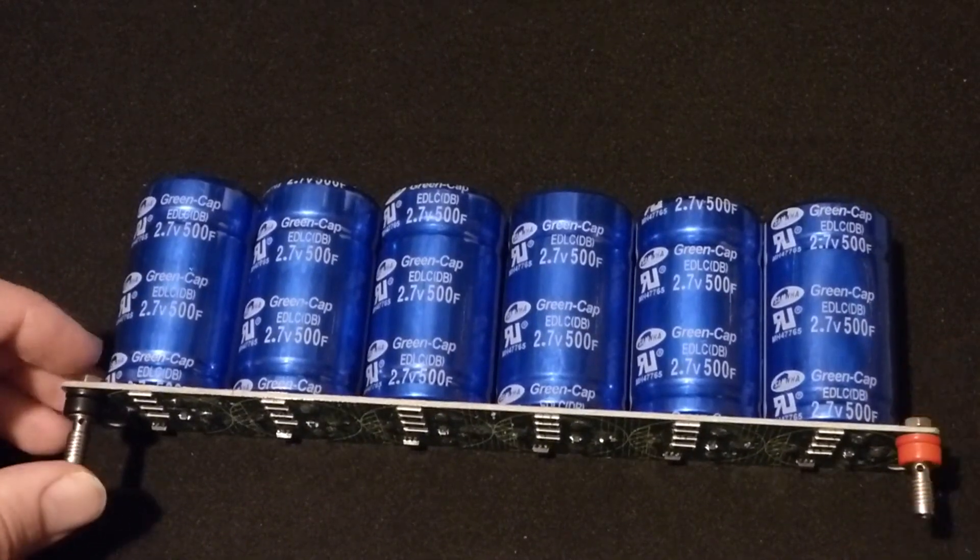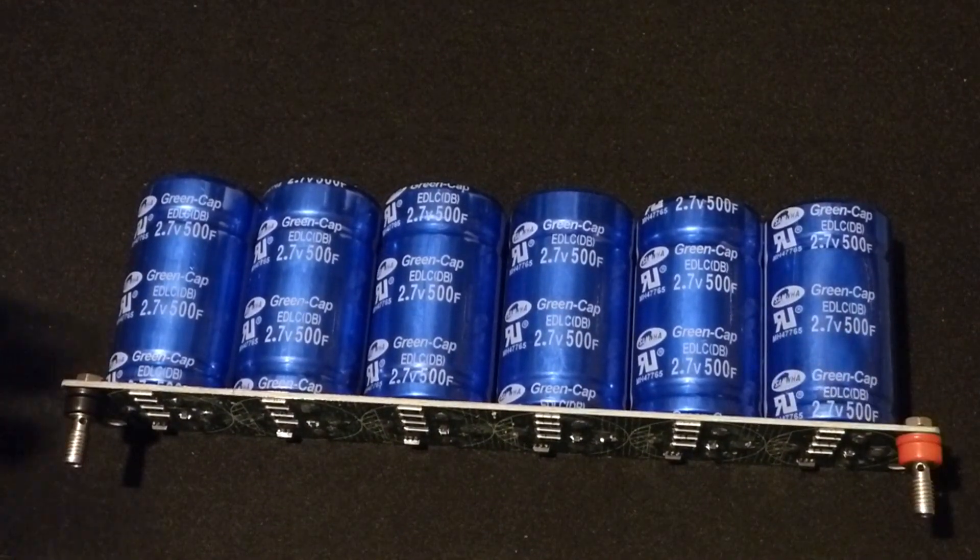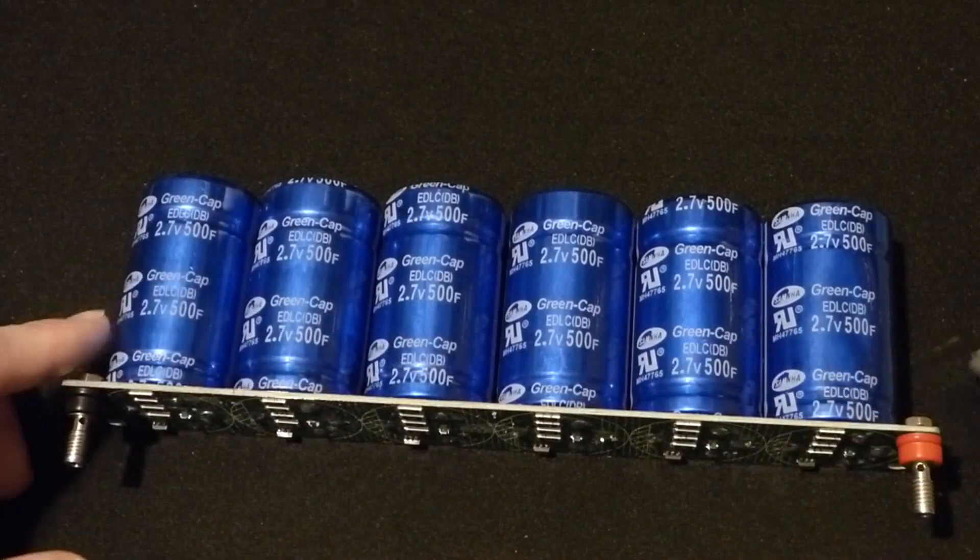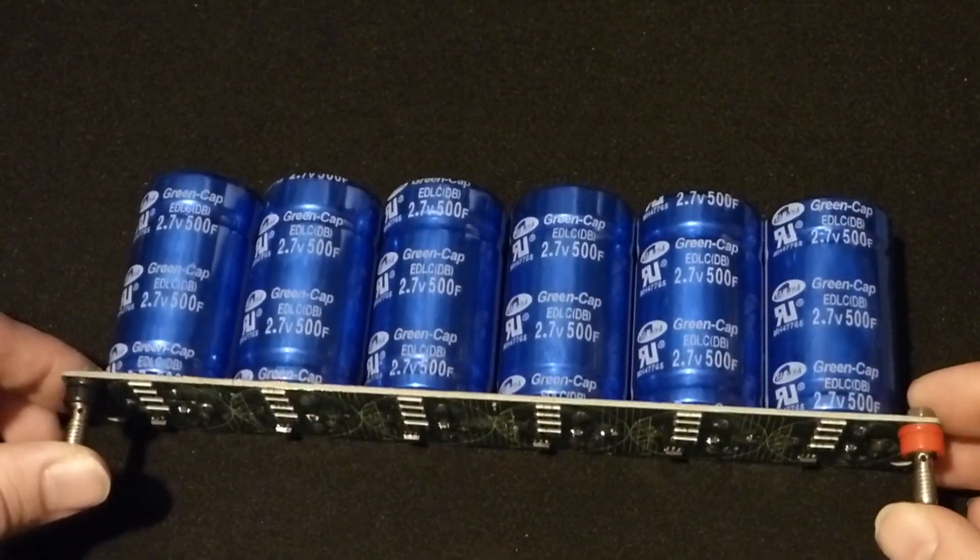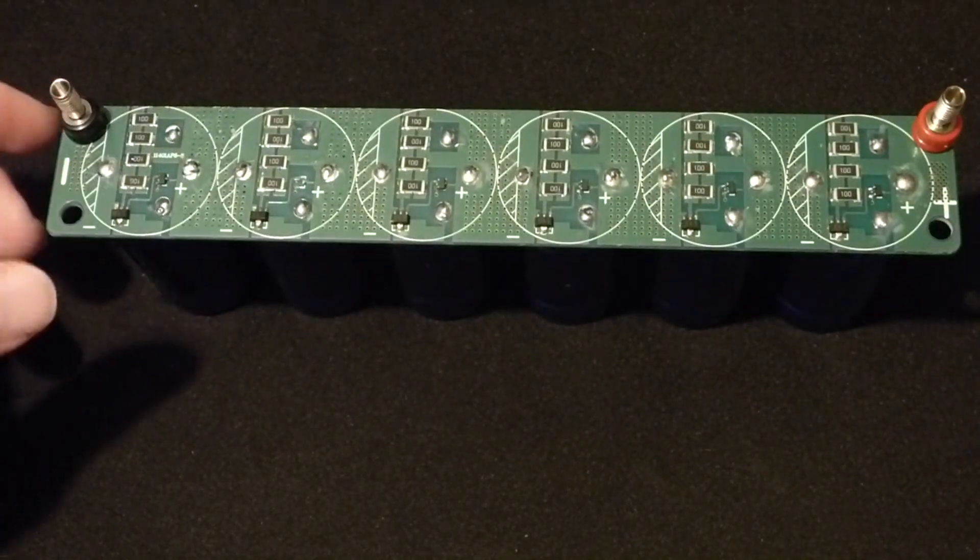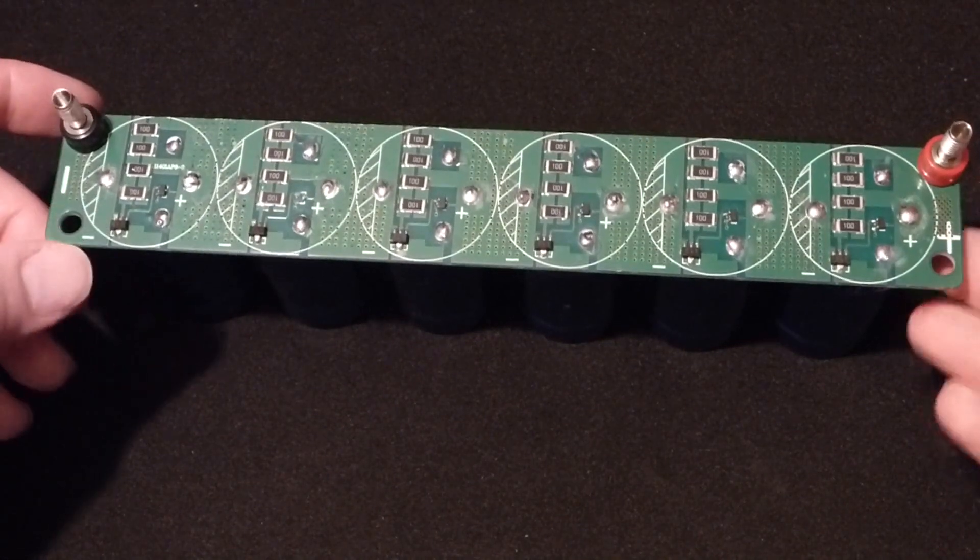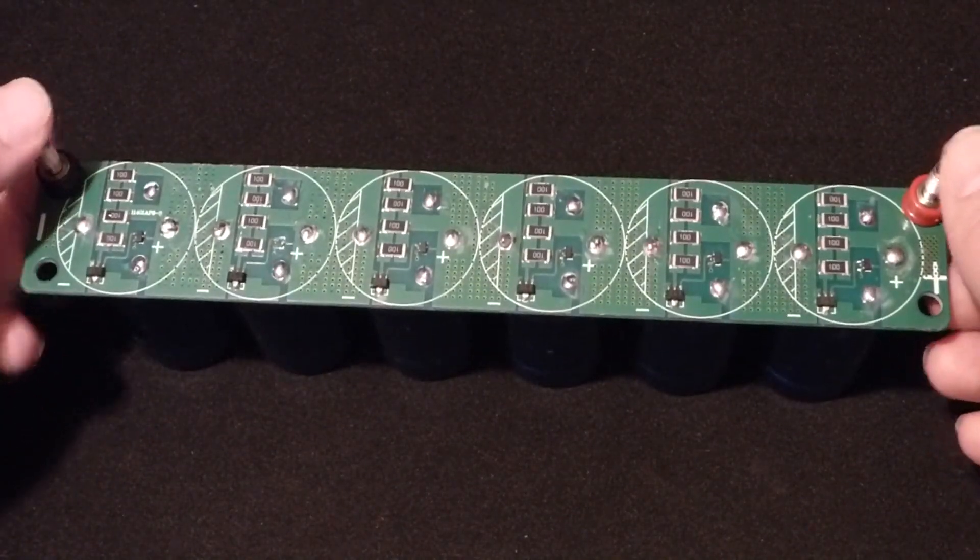Now the capacitance goes down though, so instead of 500 Farads, we divide that 500 by six and it's 83 and a third. Now these posts I grabbed from a kit, but they work pretty nice. You screw them on to the ends there.